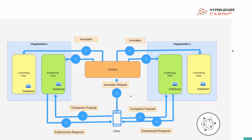Hello everyone, welcome. We are going to go through Hyperledger Fabric - how the client sends a transaction to the endorsing peer, how the endorsing peer sends back to the client, the client sends the transaction to the orderer, and the orderer broadcasts the transaction to all the committing peers. We'll see how the transaction proposal looks and how it gets sent to the endorsing peer.